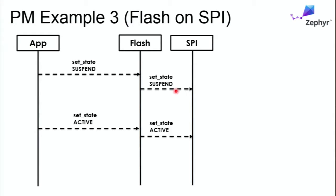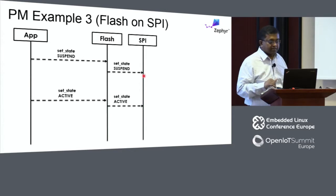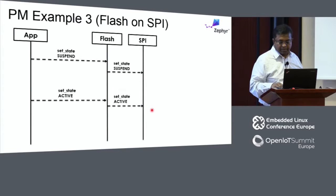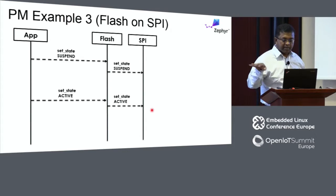The last example shows that the device PM interface can be called from multiple components. For example, flash is dependent on SPI. The application turns off flash; the flash driver knows it depends on SPI, so it calls set state suspend on the SPI. The SPI driver can decide if there are any other devices using it — if not, it can go to off; otherwise it ignores the call. Similarly, when the application turns flash back on, the flash driver can turn SPI back on. This is one way to use this model. Others include clock trees — when devices are turned off, you can turn off the PLLs that feed common devices. There is a lot of potential to use this infrastructure.